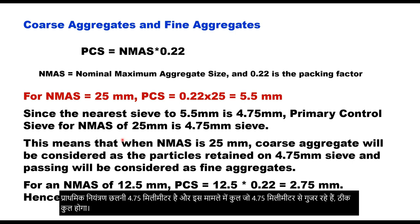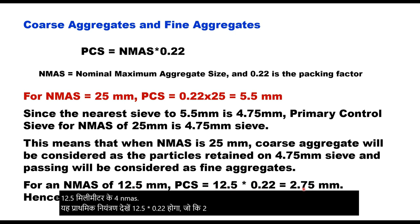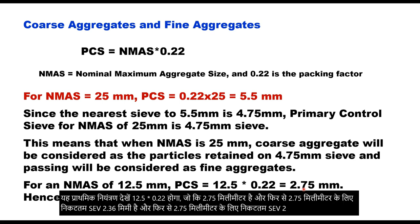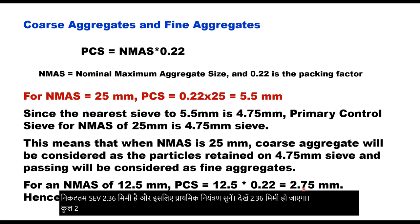For NMAS of 12.5 mm, the primary control sieve will be 12.5 × 0.22 = 2.75 mm. The nearest sieve to 2.75 mm is 2.36 mm, and therefore the primary control sieve will be 2.36 mm. Aggregate passing through 2.36 mm will be fine aggregate and retained on 2.36 mm will be coarse aggregate.